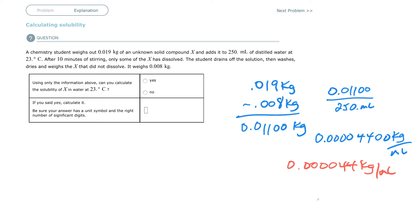Maybe I should have asked what the questions are. Using only the information above, can you calculate the solubility? Yeah, of course you can. If you said yes, calculate it. Be sure the answer has a unit symbol and the right number of significant digits. Okay, well, the unit symbol would be that, kilograms per milliliter. So it's going to be 0.000044 kilograms per milliliter. Nice and easy.